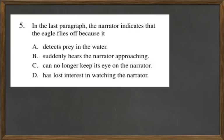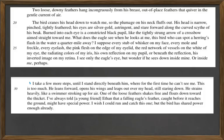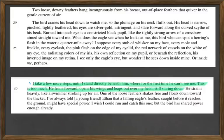So let's go to that passage right here starting on line 29. It says, 'I take a few more steps until I stand directly beneath him, where for the first time he can't see me. This is too much. He leans forward, opens his wings, and leaps out over my head, still staring down.' So when it says 'this is too much,' it is referring to where for the first time the eagle cannot see him.